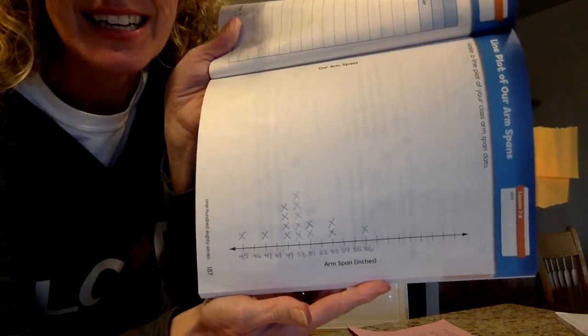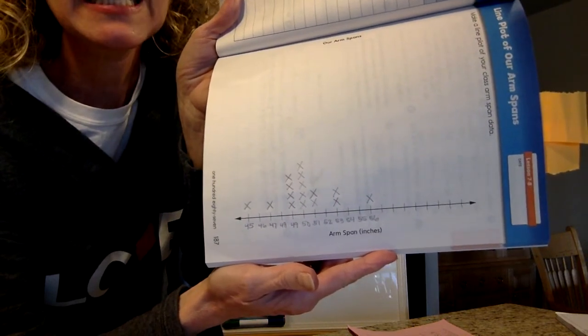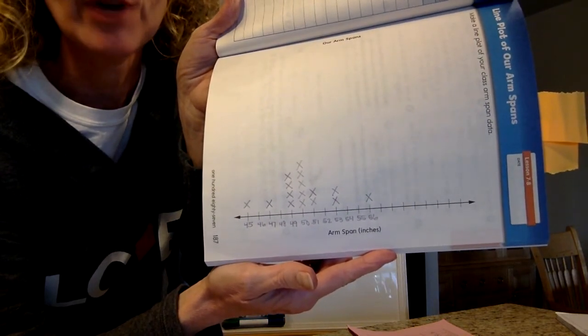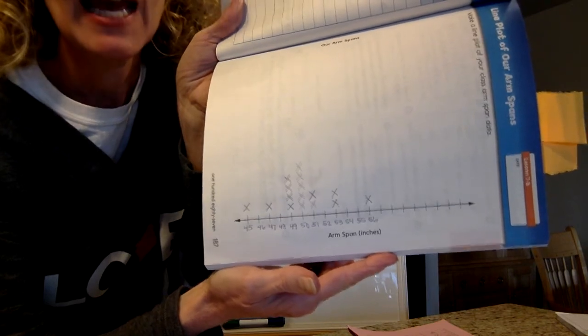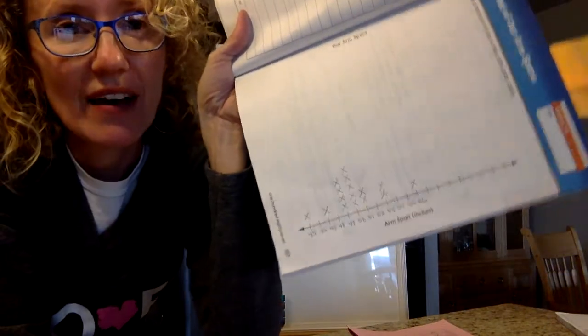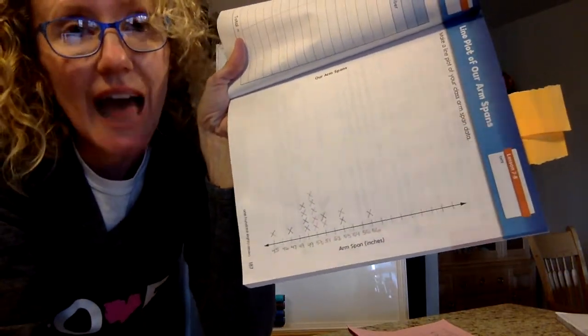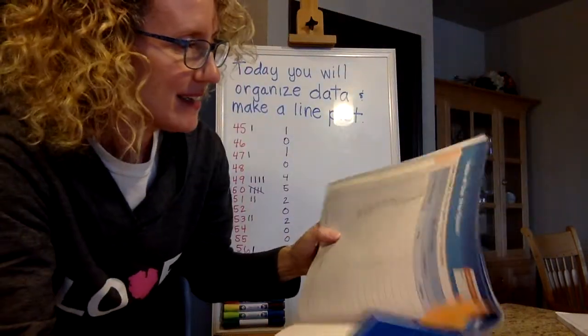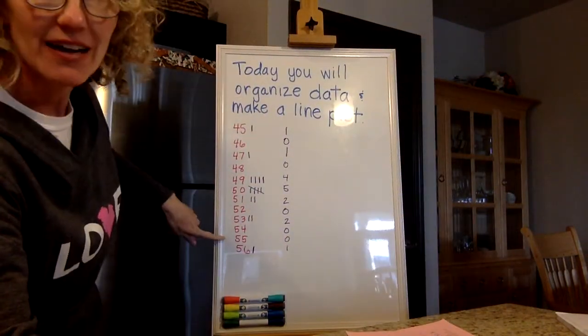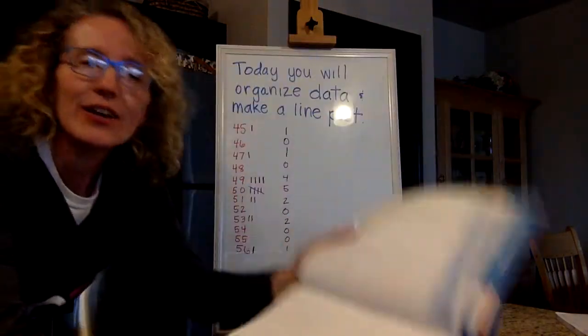Once we got our data organized, that didn't take very long, did it? And do you see how it looks like a graph? And some of the places that didn't have any people that had their arm span that length? There are none. And is the tallest column where we had our most people with that arm span? Yeah. So it kind of works out. This is called a line plot. And this is your data. So we organized our data. We made a line plot. You're fantastic.